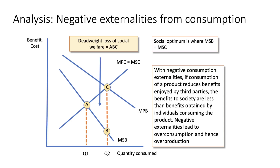With negative externalities from consumption, you have a choice of diagrams. In this one, I'm assuming there's a negative impact on the benefits of third parties, so the marginal social benefit lies below the marginal private benefit. The implication is clear: in the absence of an intervention policy, there is a deadweight loss of social welfare. In the exam, if you get a question on plastic consumption or food waste, make sure the axes are contextualised — for example, 'quantity consumed of X' — make that clear.